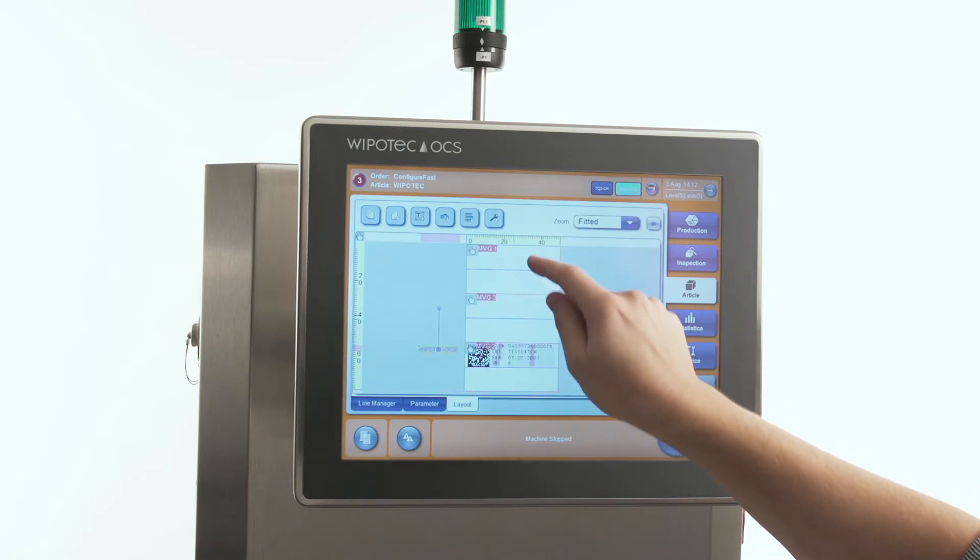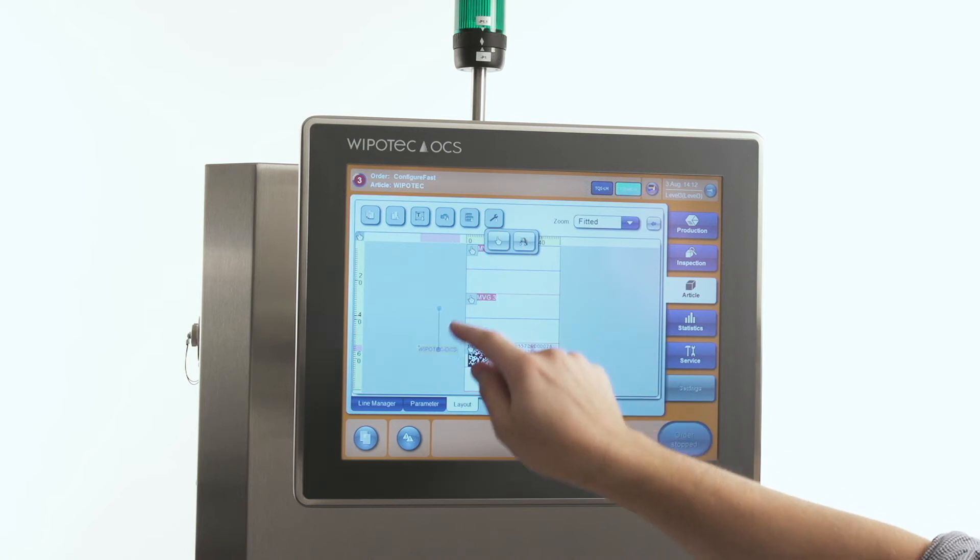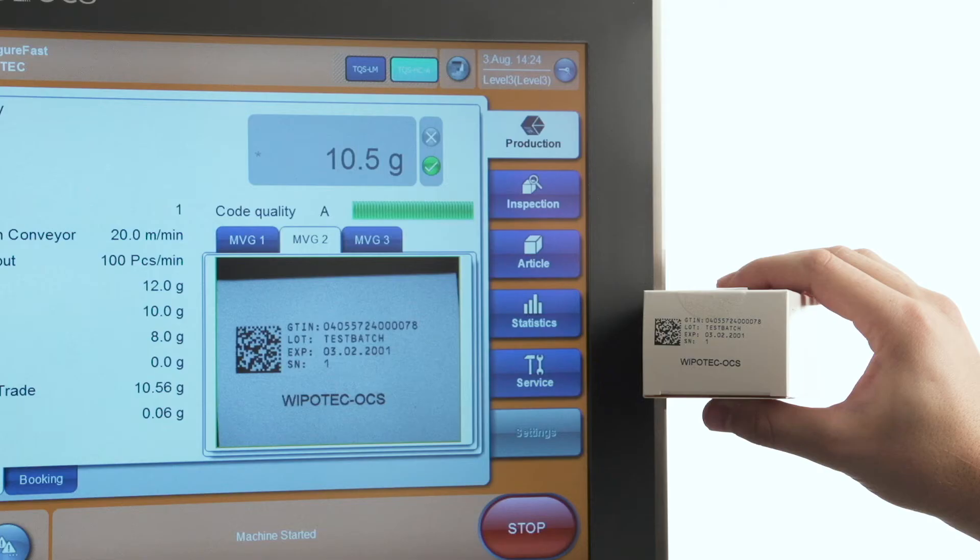With ConfigureFast, the print data is sent simultaneously to both the printer and the imaging processing unit, eliminating the need for long downtime. Your new product layout is now configured to the machine and you can resume the process of bringing up your production line.